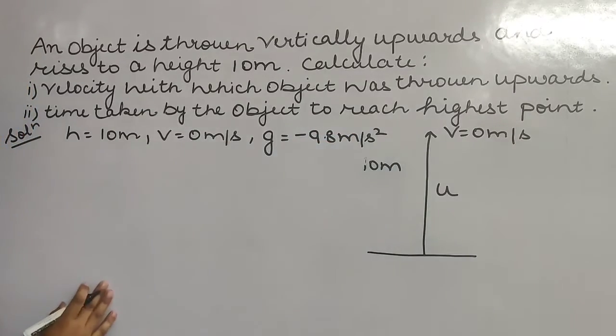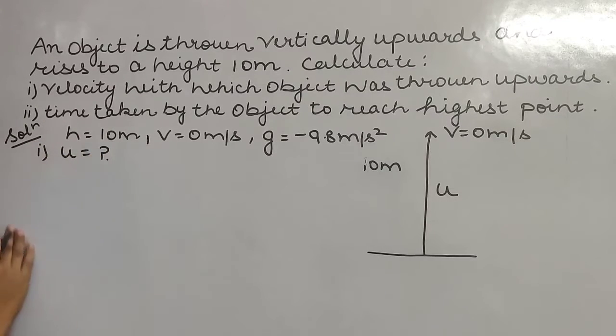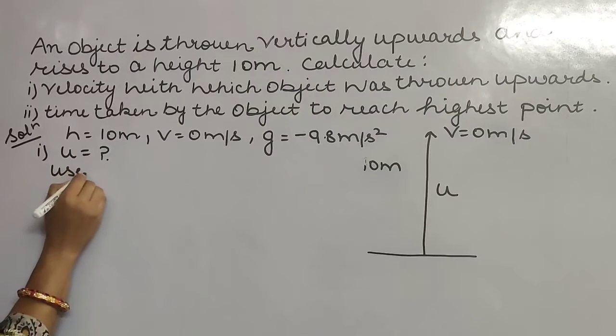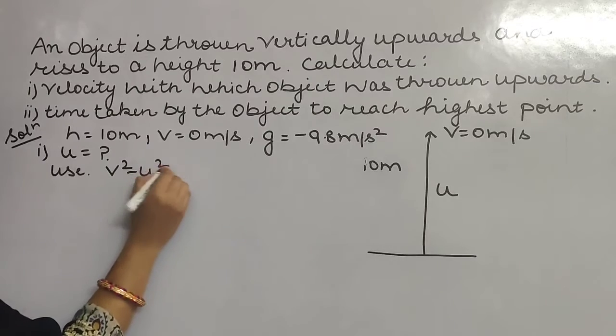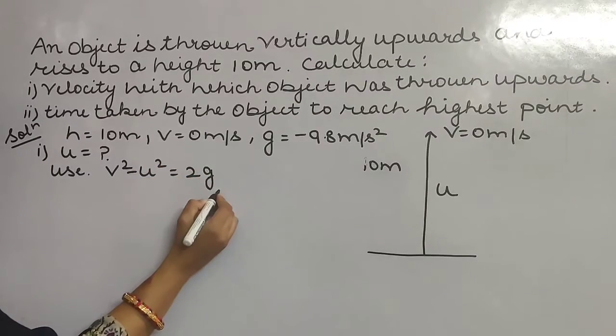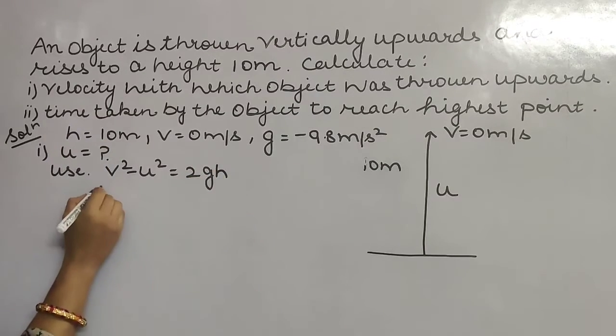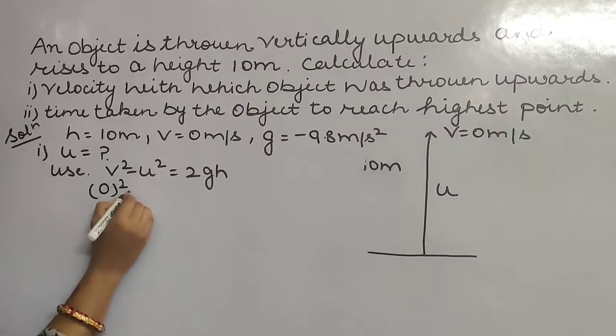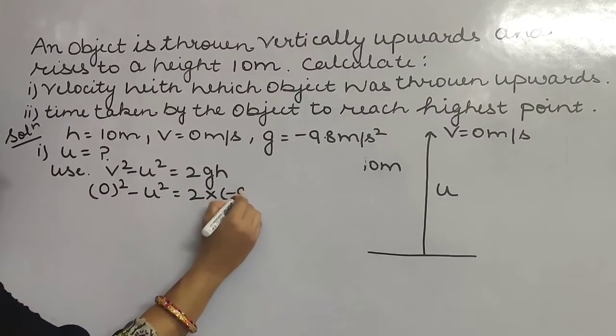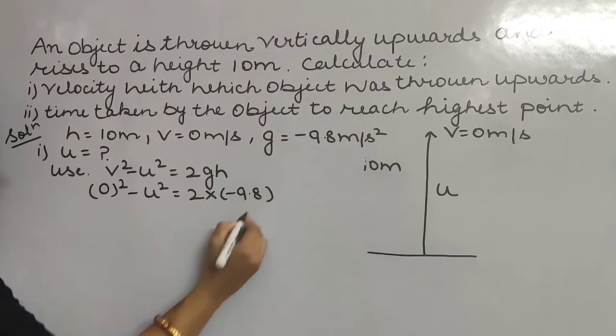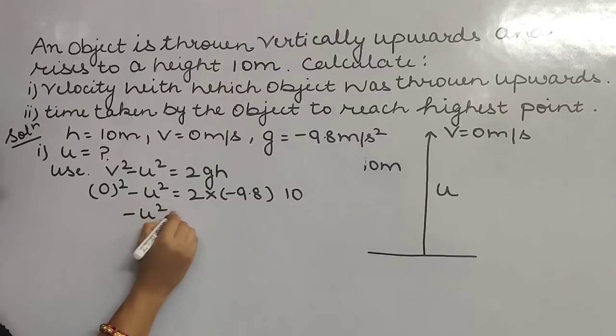In the first part you have to calculate initial velocity, so use the third equation of motion: v² - u² = 2gs. We can replace s by h. v is 0, u you have to calculate, g is -9.8, h is 10. So -u² = -2 × 9.8 × 10.